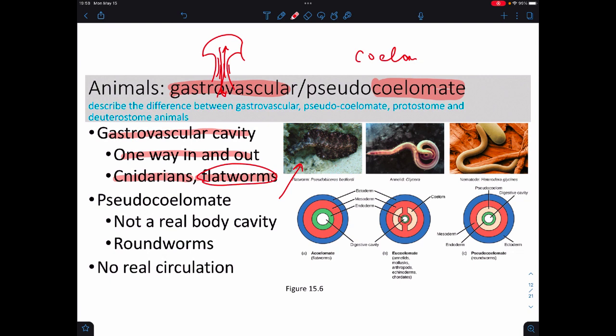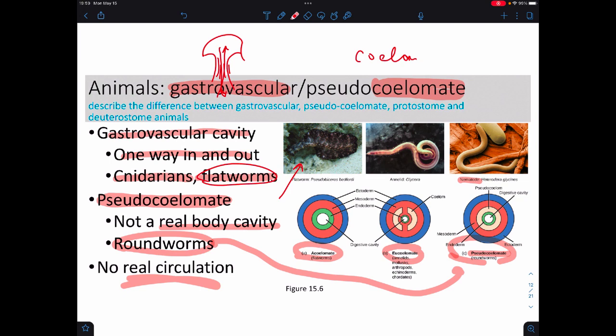The pseudocoelomates are ones that seem to have a body cavity, but it turns out not to be a real one. That's what we call over here, where it's a pseudocoelomate. So, these don't happen to be a real body cavity. These are going to be roundworms. So, roundworms meaning things like nematodes, and these cause all sorts of trouble with them. The acoelomates, meaning gastrovascular cavities, and the pseudocoelomates, both of them turn out to have no real circulation, meaning they don't need to have a circulatory system because they're so tiny that they don't need it. It's when we start getting into real body cavities, so eucoelomates, that we need to have circulation.